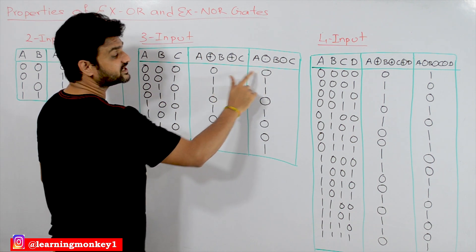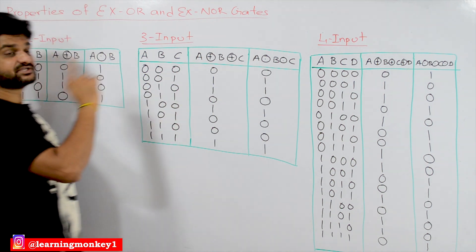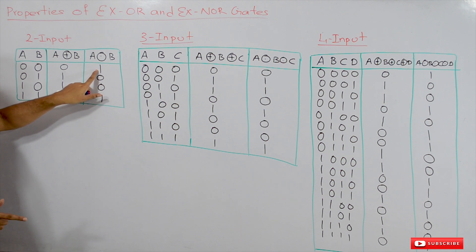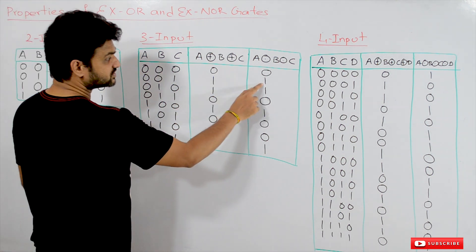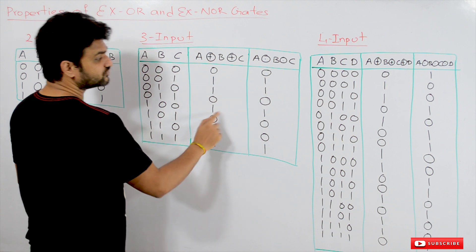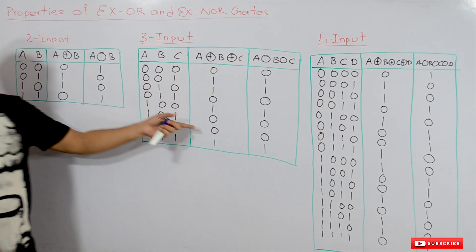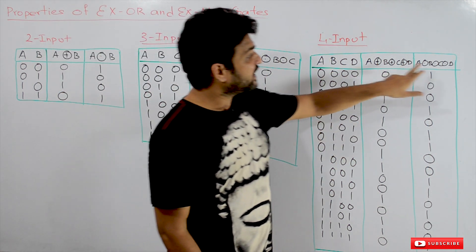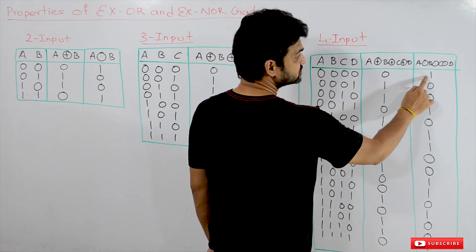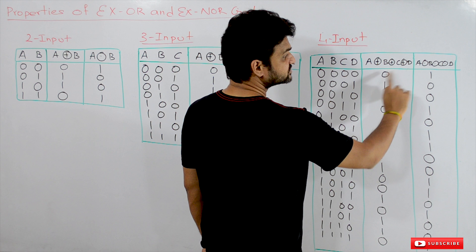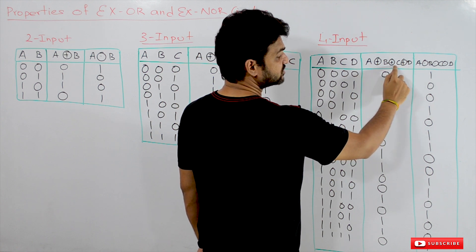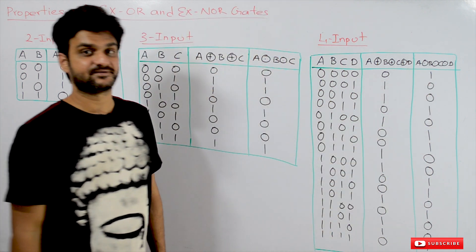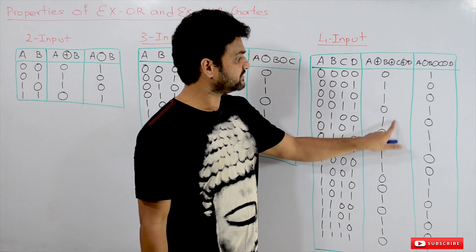As we have seen in the two-input XOR and XNOR gate, the outputs are just complements of each other. Similarly, if you take a four-input XOR gate and XNOR gate, the outputs are just complements. The output of the XNOR gate is the complement of the XOR gate for four-input combinations.